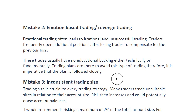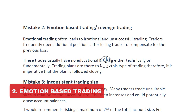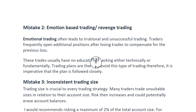The second mistake a lot of people make in trading is emotion-based trading, popularly called revenge trading. Emotional trading often leads to irrational and unsuccessful trading decisions. Traders frequently open additional positions after losing trades to compensate for their previous loss. This is very terrible — you are already in a losing trade and you see traders adding up more positions simply because they feel the market is going to go in their favor, to mitigate previous losses and neutralize the trade at zero loss. This is very dangerous.